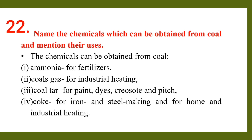Chemicals obtained from coal: Number 1: Ammonia, used for fertilizer. Number 2: Coal gas, used for industrial heating. Number 3: Coal tar, used for paint, dyes, creosote, and pitch.